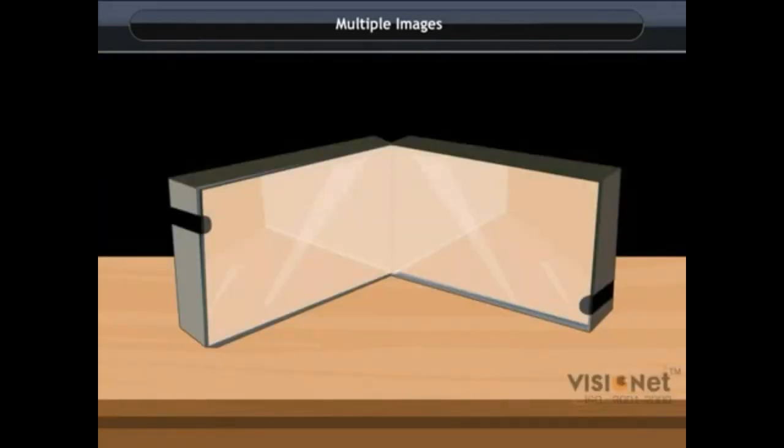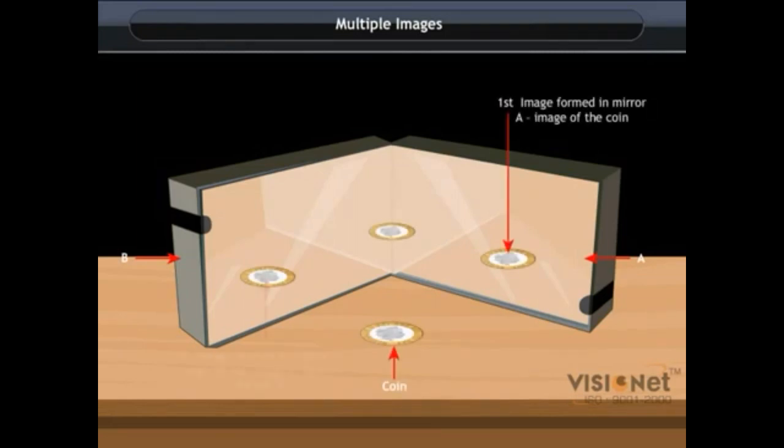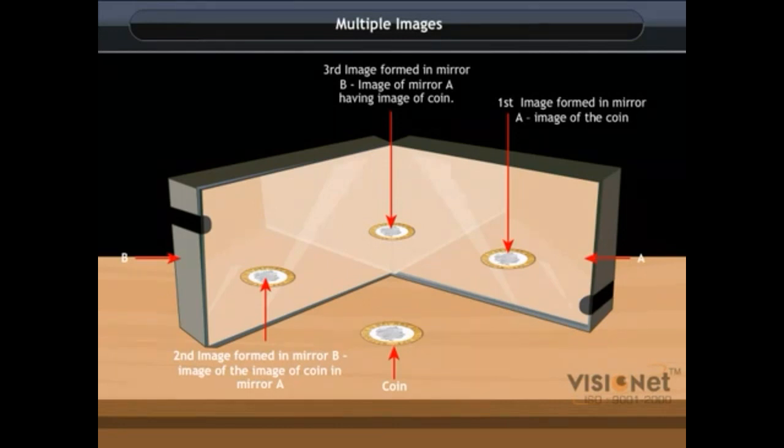Let us understand this with the help of an activity. Take two plain mirrors, label one as A and the other as B. Keep them at the angle of 90 degrees. Now place a coin in between the mirrors. What do you observe? We observe three images of the coin. How are images formed? Actually, one image in one of the mirrors acts as the object for another mirror, so we get two images. Also, images of both mirrors are also seen in each other, and hence we are able to see three images.